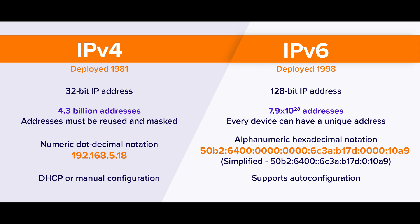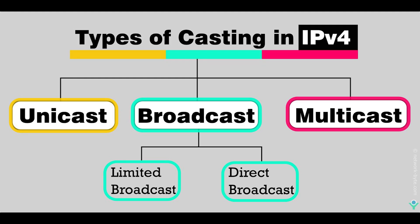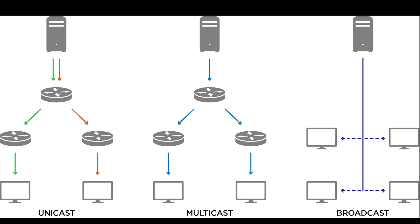Let's look at the casting or communication differences between the two. Starting with IPv4, which has unicast, broadcast, and multicast. With unicast, a single address is specified. Data sent with unicast addressing is delivered to a specific node identified by the address. It is basically point-to-point or one-to-one address link.